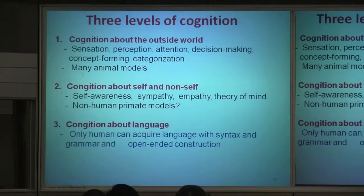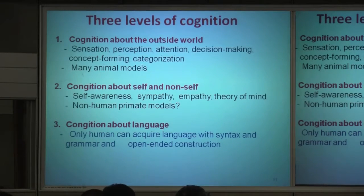I am talking to you; I know you are talking to me. Without self and non-self cognition, you cannot have language. Language ability is only human, because only humans can acquire language with syntax and grammar, and it has an open-ended construction of sentences. No animal has it. You can train chimps for years and years — they can recognize symbols but not language; they cannot form sentences.